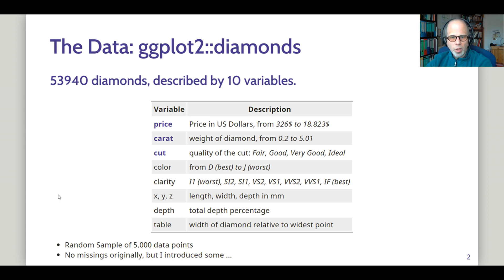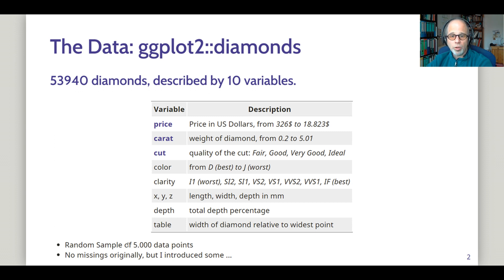I just took a random sample of 5,000 data points from this larger dataset to make the visualizations a bit easier to read and to avoid overplotting, and I introduced some missing values. If you want to see how I did that, you can check that out in my code, which I put on my GitHub profile. There's a link in the description.